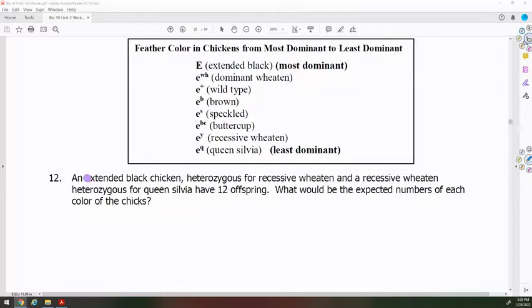An extended black chicken, heterozygous for recessive wheaton, is the first parent. So they're going to have a capital E in their genotype, followed by EY.